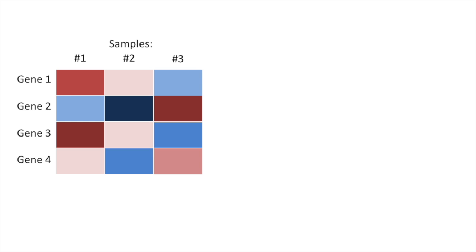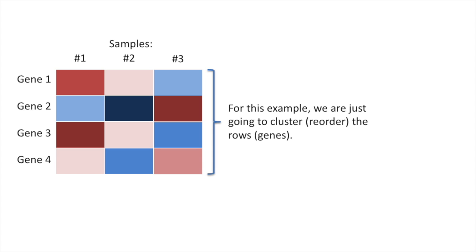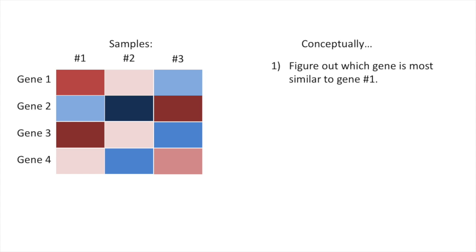We'll start with a simple example. Here we've got a simple heat map that has three samples and four genes. For this example, we are just going to cluster or reorder the rows, or the genes. Conceptually, the first step is to figure out which gene is most similar to gene number one. Genes number one and two are different — we can tell because the colors are very different. Gene one is highly expressed in sample number one, so it has a red color.